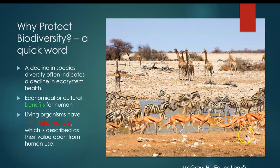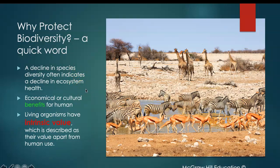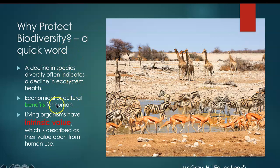A quick message: a decline in species diversity often indicates a decline in ecosystem health. So if one species is not doing very well, that's a bad sign for the whole ecosystem. If one species is dying out in one area, that is bad news for other species on the planet. We want to protect biodiversity because ecosystems are of great value to us.